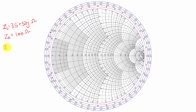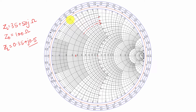When we calculate the normalized load impedance to locate on the Smith chart, this will be equal to 0.35 plus j0.5. We can locate this by moving to 0.35 on the real axis — between 0.2 and 0.4, we have 0.3, and between 0.3 and 0.4 we have 0.35. Also, the imaginary part is 0.5, so the cutting point will be somewhere here.